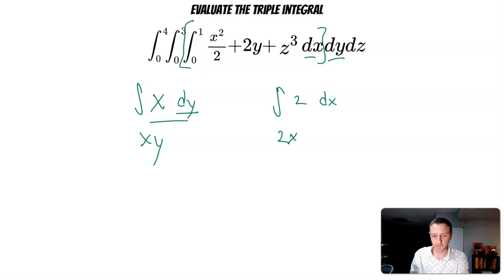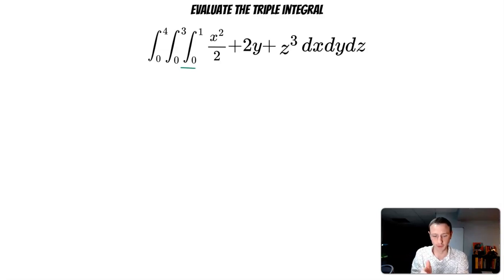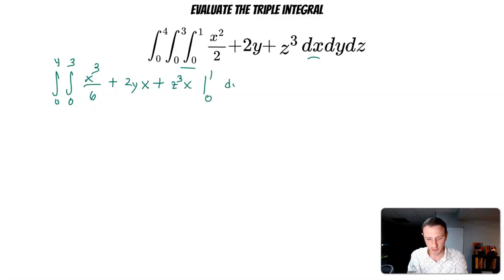So let's go ahead and start this portion. So I'm going to do that first integral. I'm going to do 0 to 1, this whole statement with respect to dx first. So let me rewrite my integral here. So 0 to 4, 0 to 3. And then this is going to become x to the third over 6, plus 2yx plus z to the third x. And this is running from 0 to 1. And then you could even put in that dy dz.